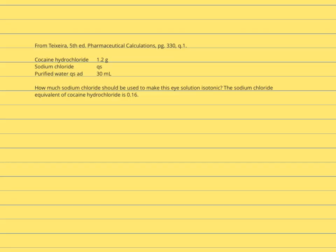So let's apply these concepts to a problem from your textbook. We're given the following prescription: cocaine hydrochloride, 1.2 grams; sodium chloride, quantity sufficient; purified water, quantity sufficient to make a total volume of 30 milliliters. The question is, how much sodium chloride should be used to make this solution isotonic? The sodium chloride equivalent of cocaine hydrochloride is 0.16.